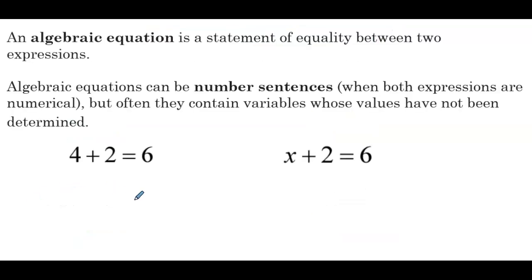An algebraic equation is a statement of equality between two expressions. Algebraic equations can be number sentences when both expressions are numerical, but often they contain variables whose values have not been determined. On the left, we have an algebraic equation, 4 plus 2 equals 6, which is just stating a fact.